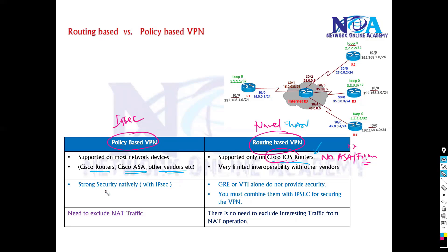With policy-based VPNs we use IPsec natively, but with routing-based VPNs we use IPsec with GRE or VTI — you can use native IPsec or GRE combinations, or apply IPsec over DMVPN. So there is no direct IPsec configuration; we apply it over the tunnel interfaces based on GRE or DMVPN.